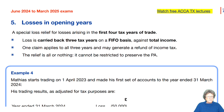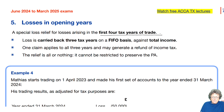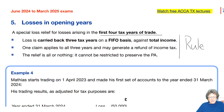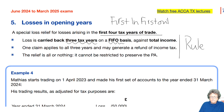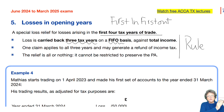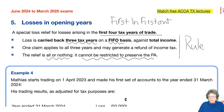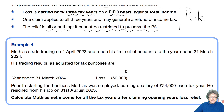Back to losses in opening years — this is the special rule available if you have a loss arising in the first four tax years of your trade. The rule is: you carry back that loss three years on a first-in-first-out basis against total income, one claim only for all three years. It can generate a refund of tax for those years because you paid them — and again it's all or nothing, and it cannot be restricted to preserve the personal allowance, so you may lose your personal allowance. Let's have a look at example number four.